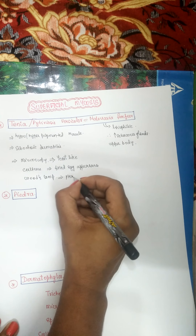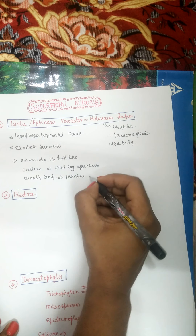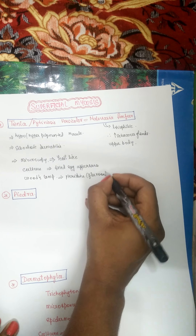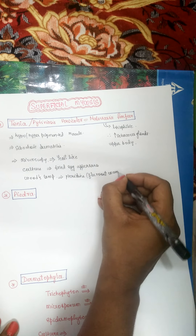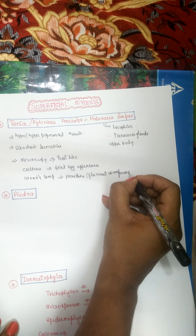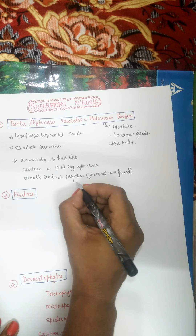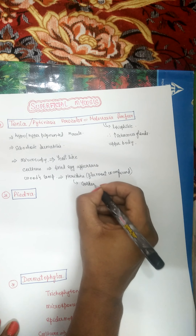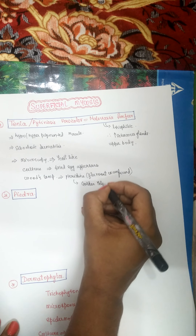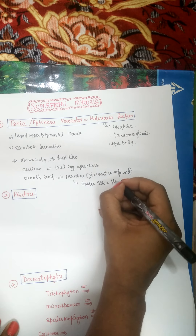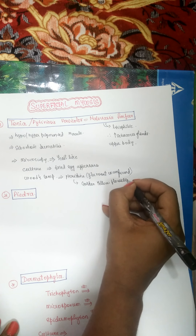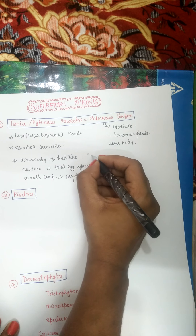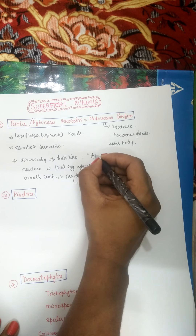In Wood's lamp, due to a pigment called terradin — which is a fluorescent compound — it gives a golden yellow fluorescence. The yeast-like appearance in microscopy is known as spaghetti and meatball appearance.